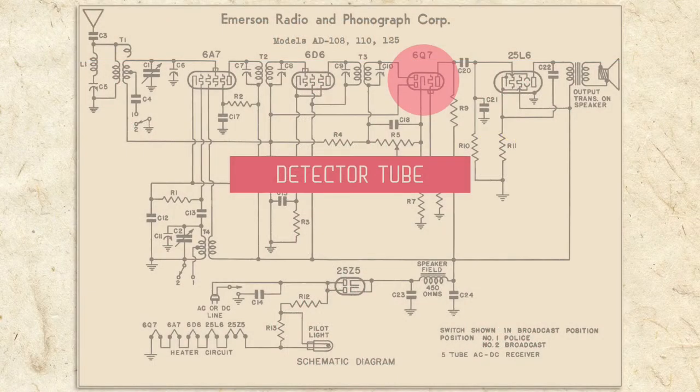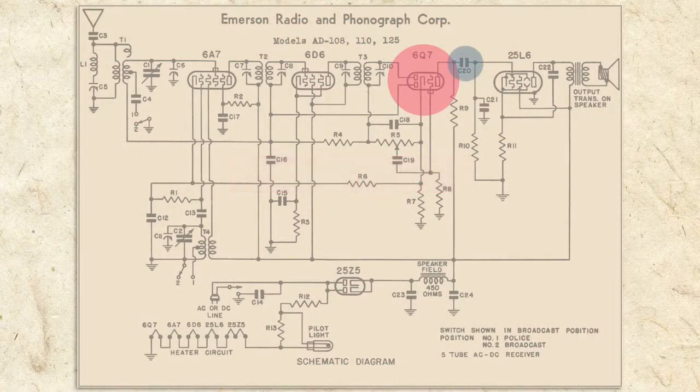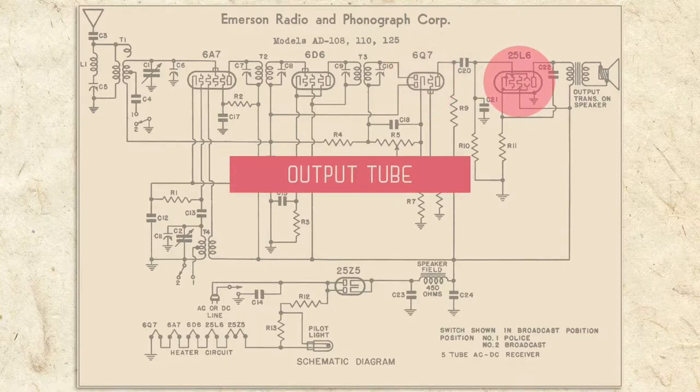As the audio signal leaves the detector tube, it passes through coupling capacitor C20 and enters the grid of the output tube.